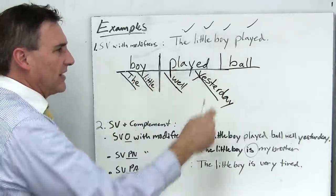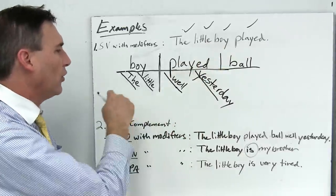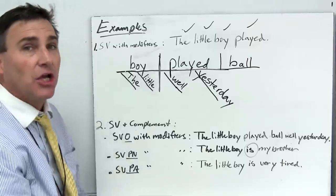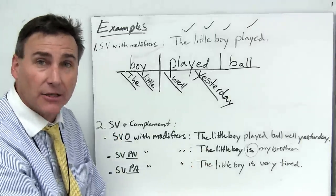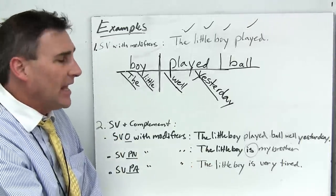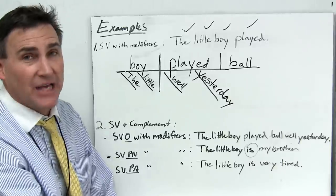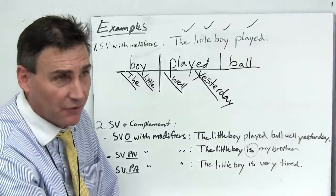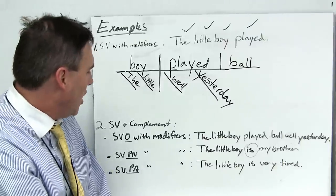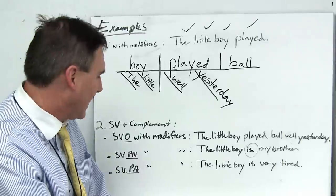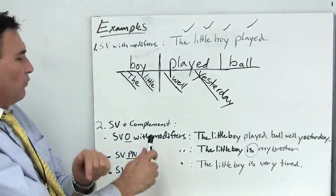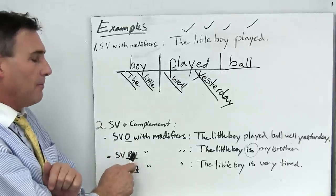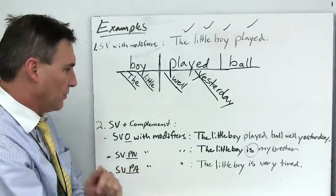And there we have the sentence. The little boy played well yesterday. But of course we also have the direct object, and we actually would insert it in between there and say the little boy played ball well yesterday, because adverbs can float in a sentence in English. When we use adjectives, they need to be right next to the noun. But adverbs can float in our language, not true of every language but in our language they can. So we've done one with modifiers, subject, verb, object with modifiers. Let's do a subject, verb, predicate nominative also with modifiers.